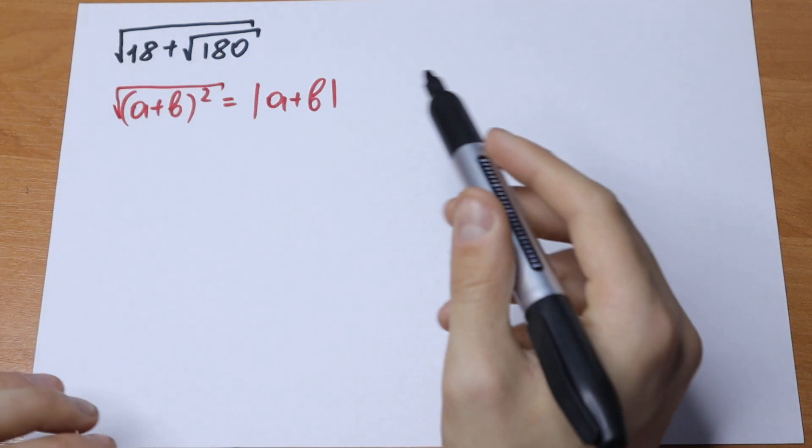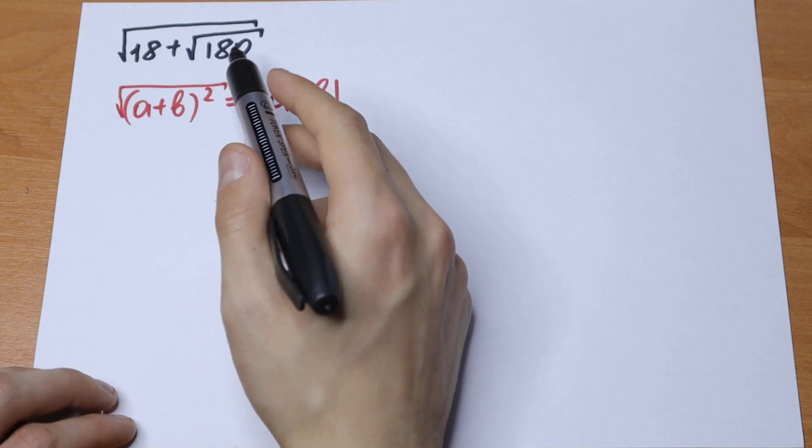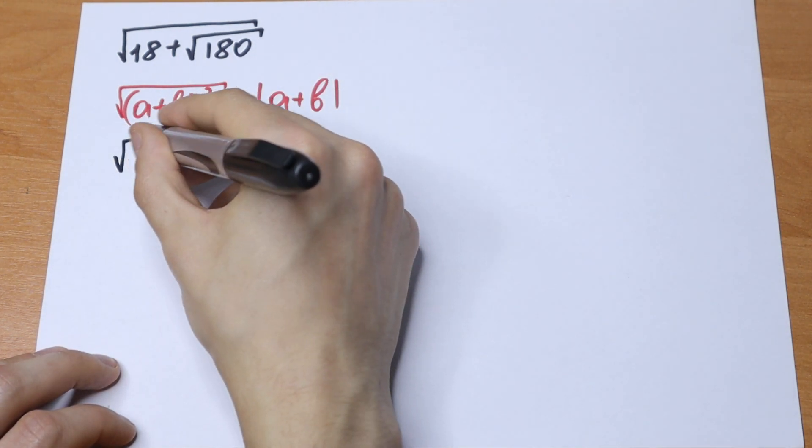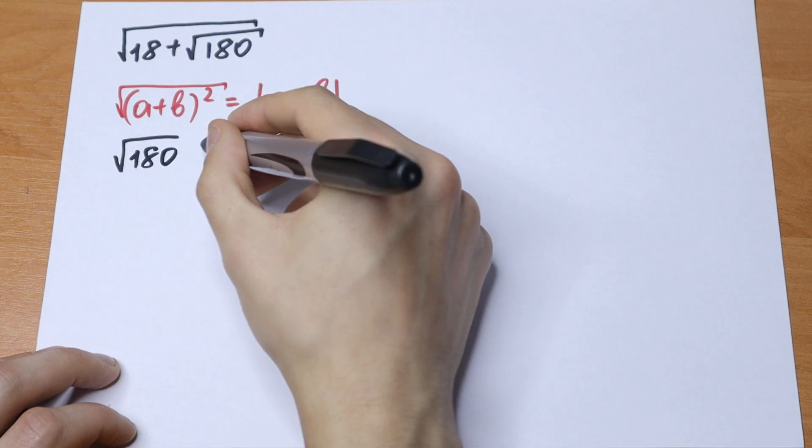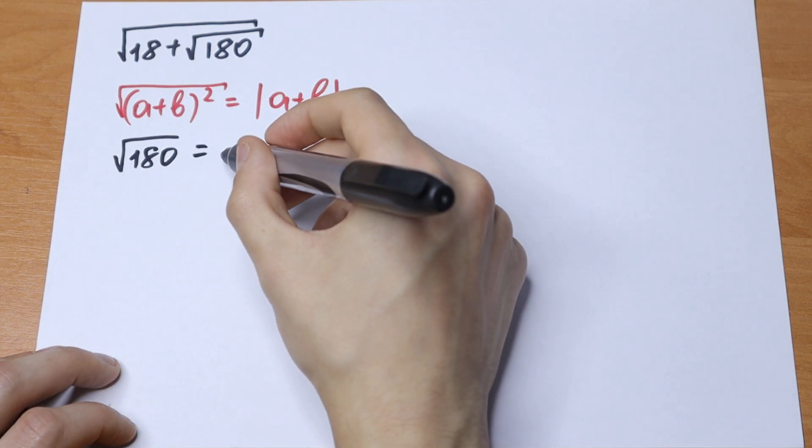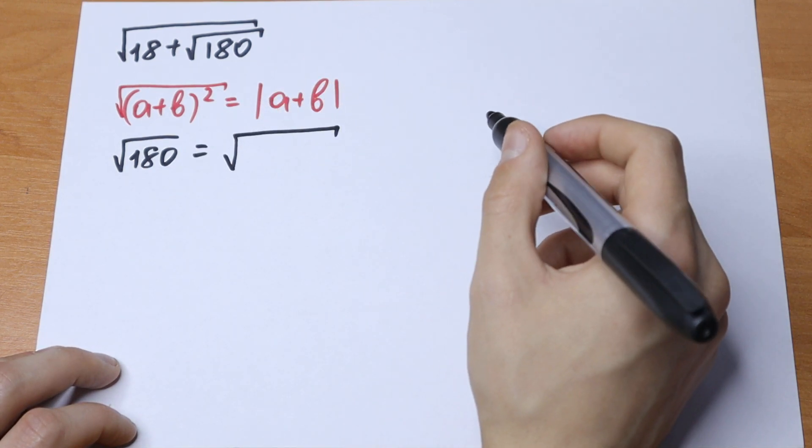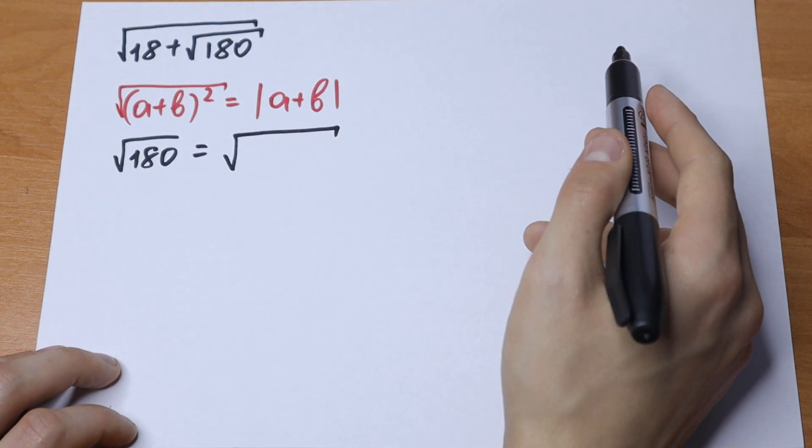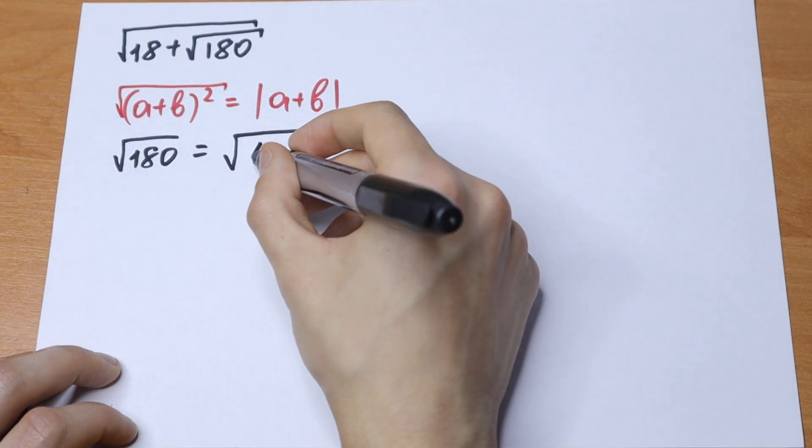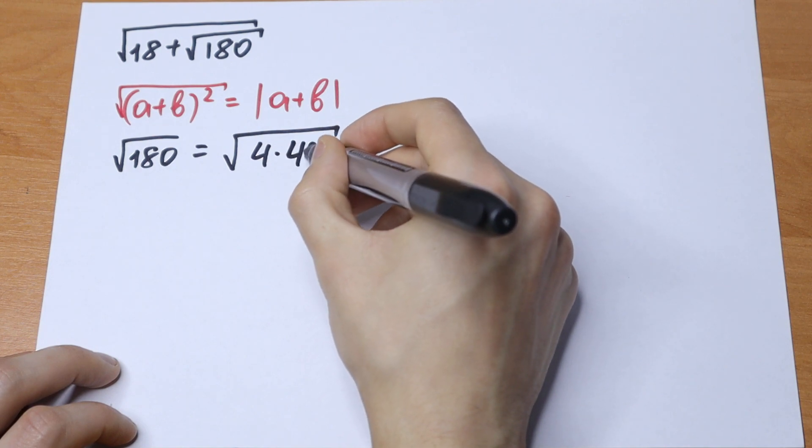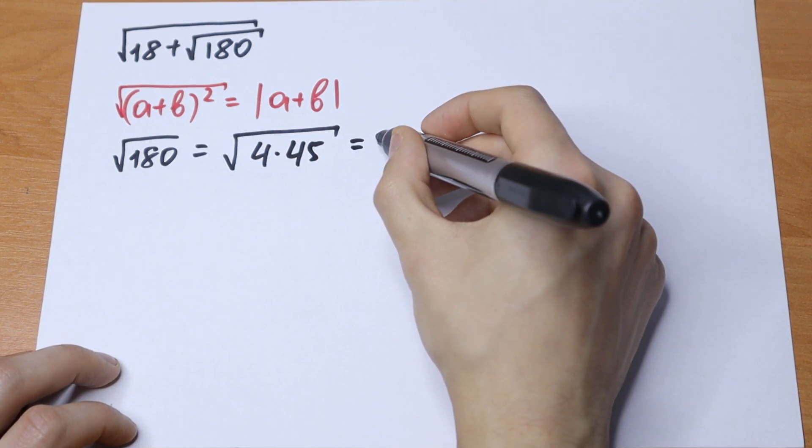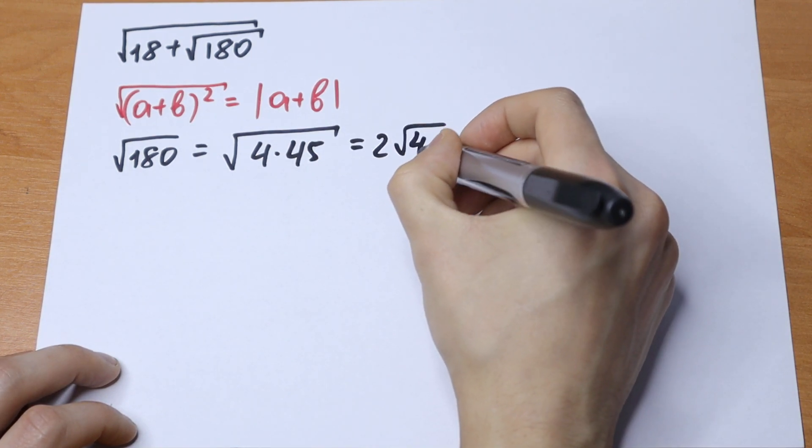Let's try to simplify this 180. How can we simplify this? We can represent this 180 as 2 times 90, or let's try 4 times 45. So it will equal 2 square root of 45.